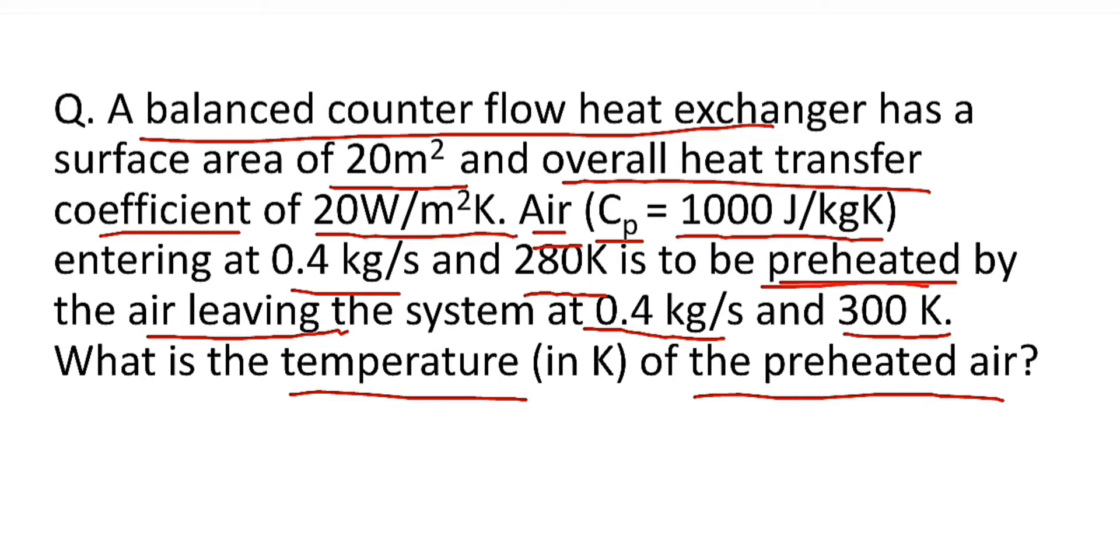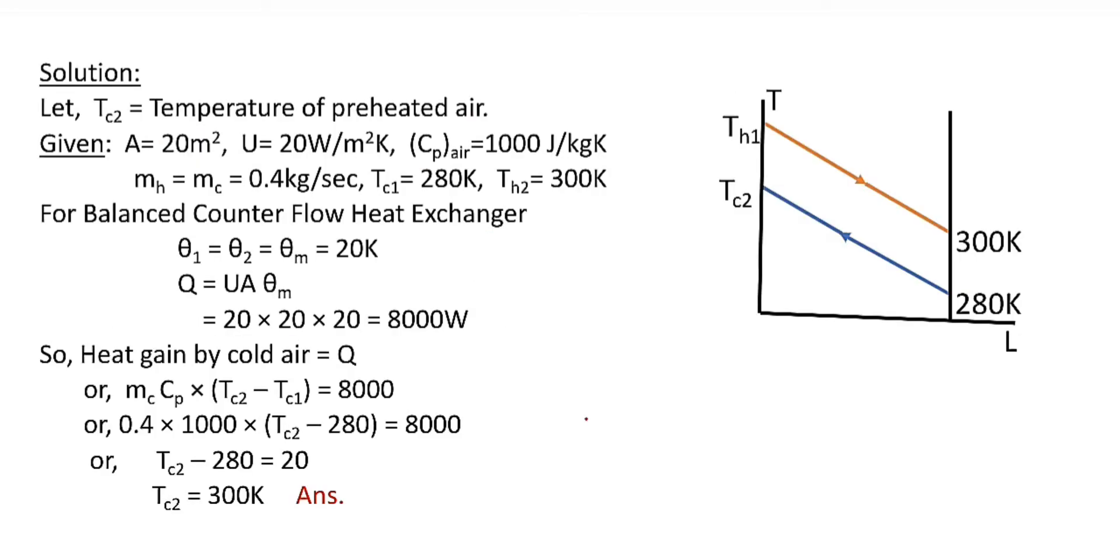Now let's go for the solution. Here we suppose TC2 is temperature of preheated air. Given: A = 20 meter square, overall heat transfer coefficient U = 20 Watt per meter square Kelvin,